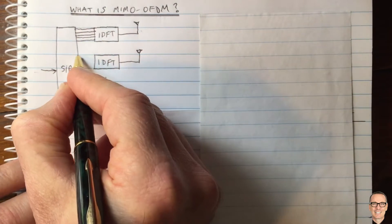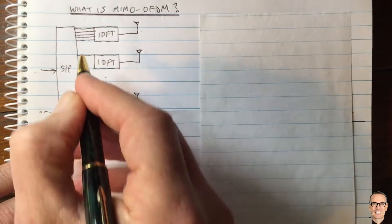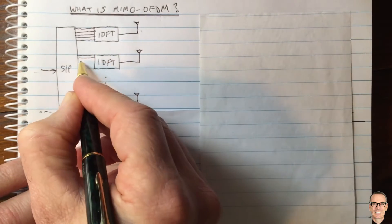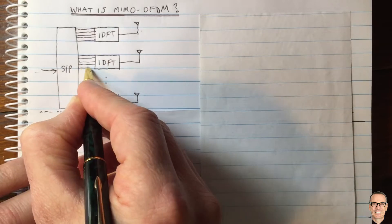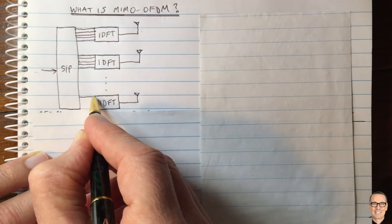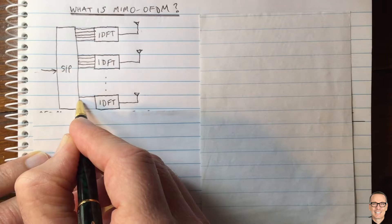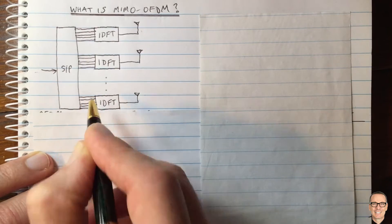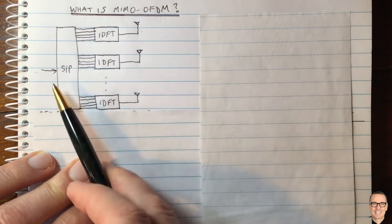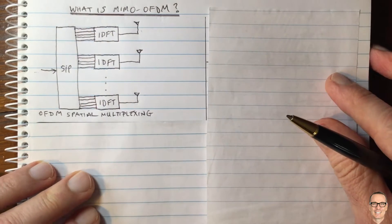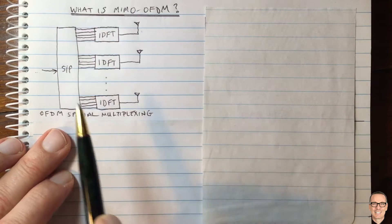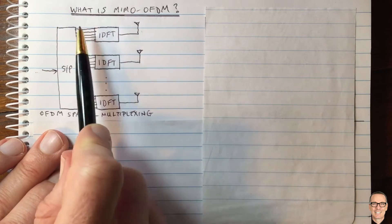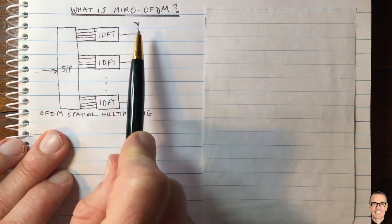The next data goes into the next antenna on the first subcarrier, then the second subcarrier for that antenna, and so on. This is the most basic version, with one OFDM modulator for each transmit antenna, and we would call this OFDM spatial multiplexing.